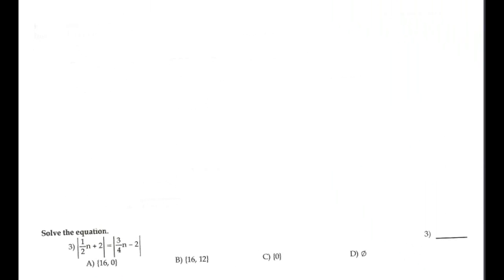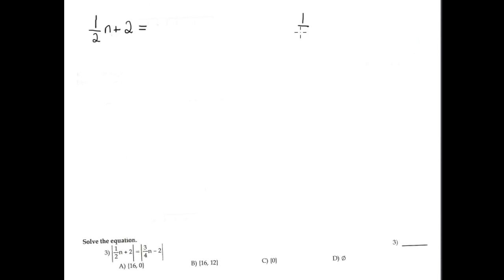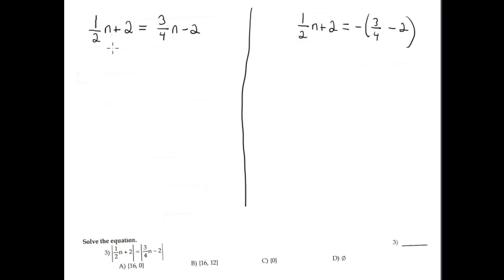Number three is an equation containing absolute value. You copy the left-hand side twice: once with the right-hand side positive and once negative. To eliminate the fraction, the least common denominator is 4. Multiply the whole equation by 4.